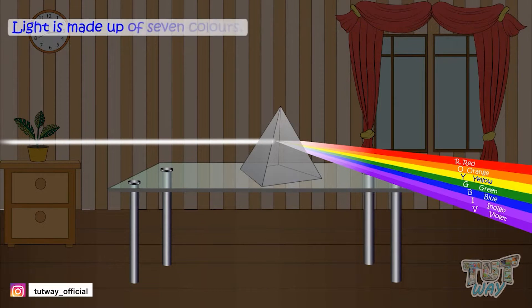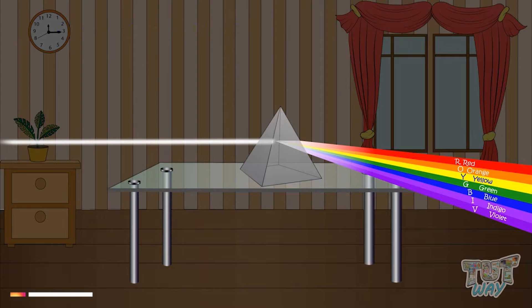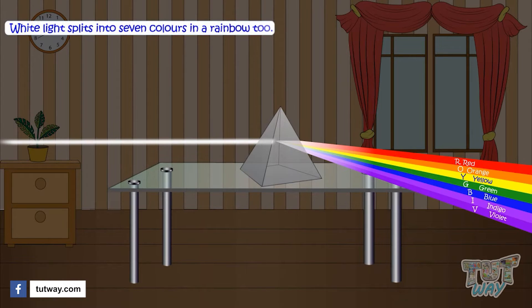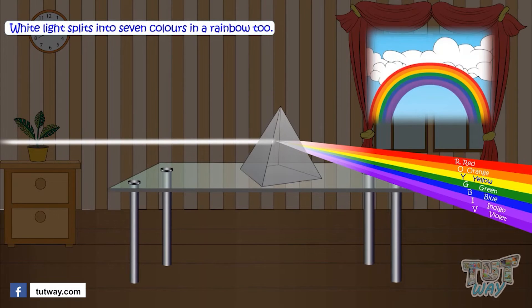These are the seven colors that light is made up of. You often see white light splitting into seven colors in a rainbow too.